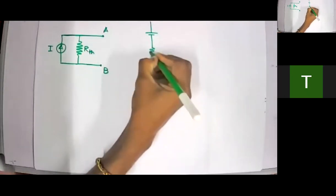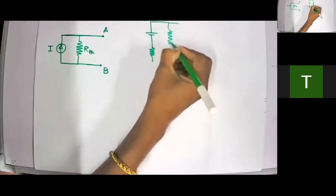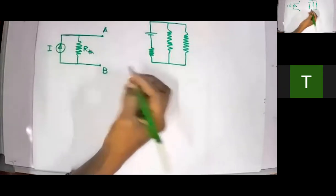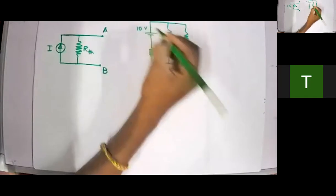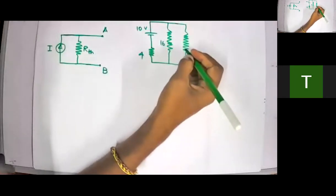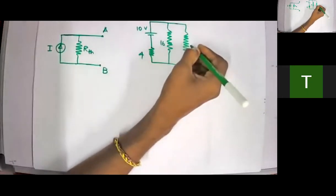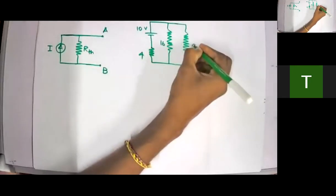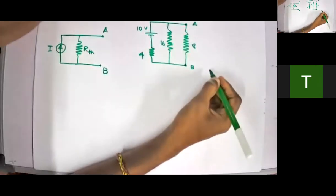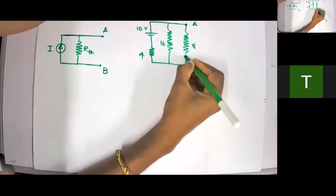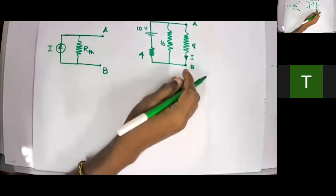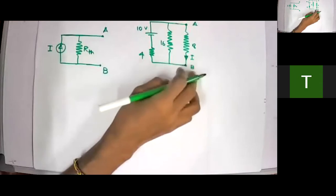I'll draw a circuit. Here I have a battery, then a resistor, another resistor, and another resistor. This is 10 volts, this is 10 Ω, this is 4 Ω, this is 16 Ω, and this could be 8 Ω. So this is your A and B. The question is: calculate the current I through the 8-ohm resistor connected between A and B using Norton's theorem.